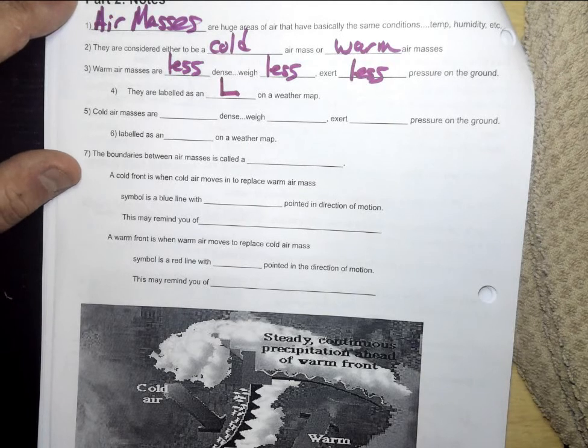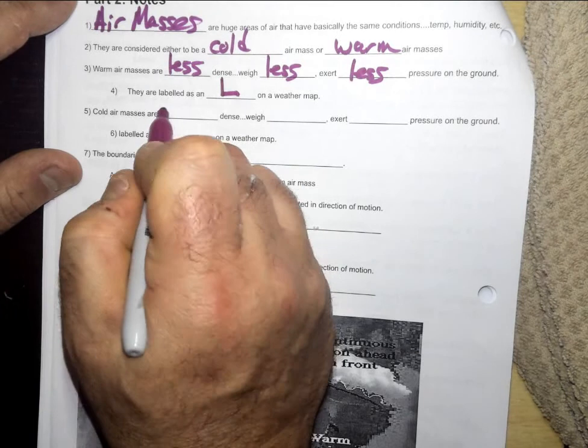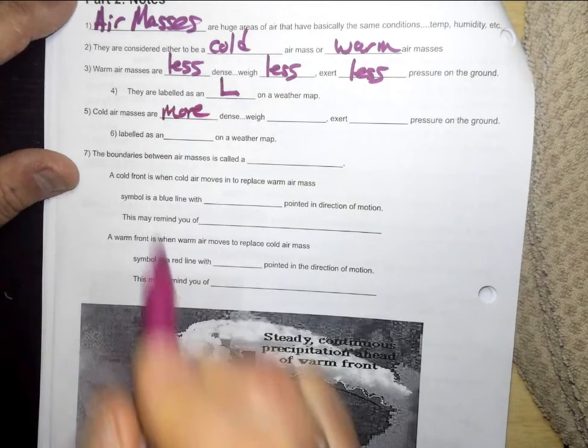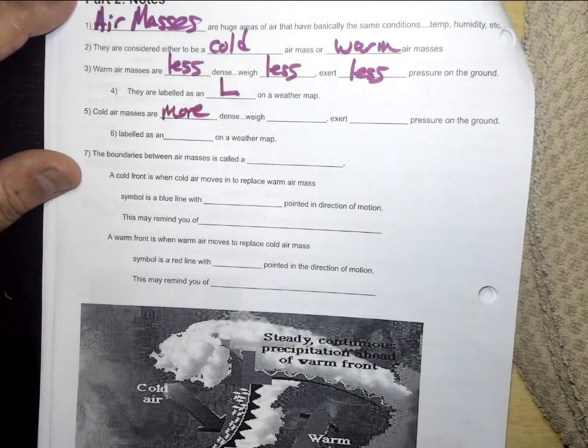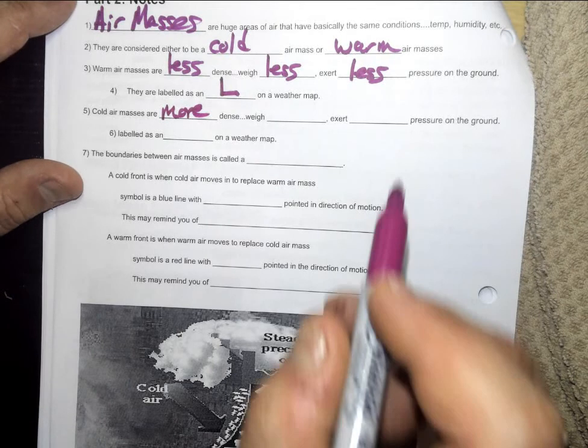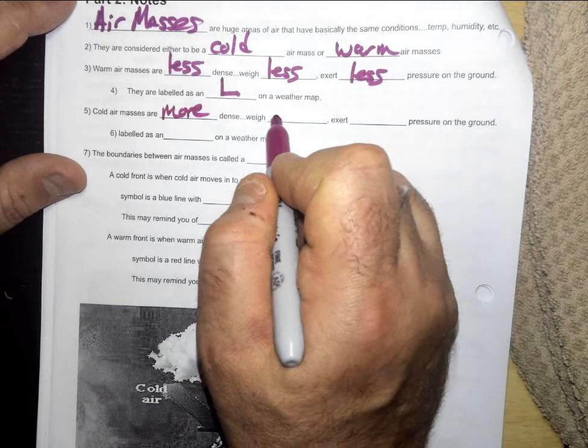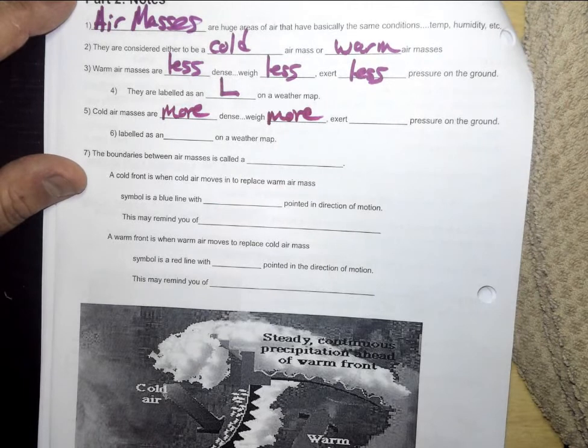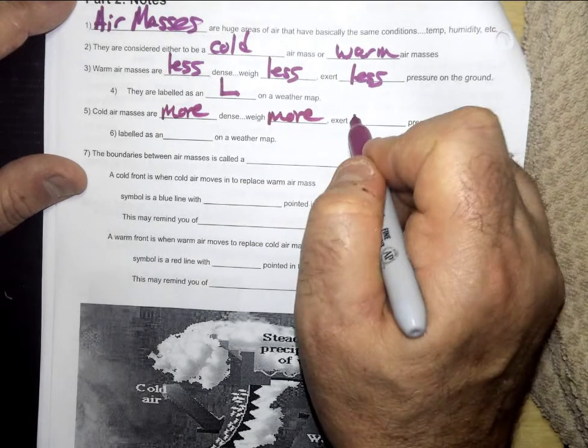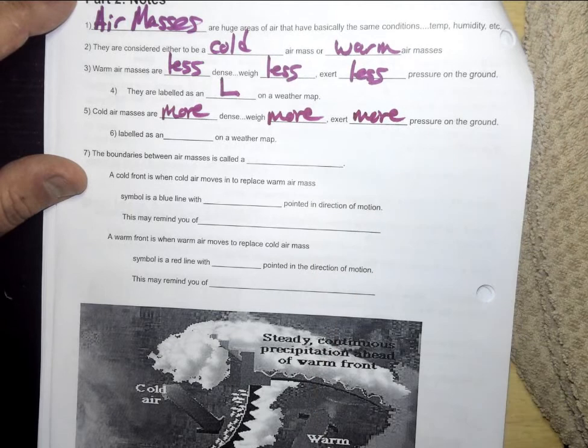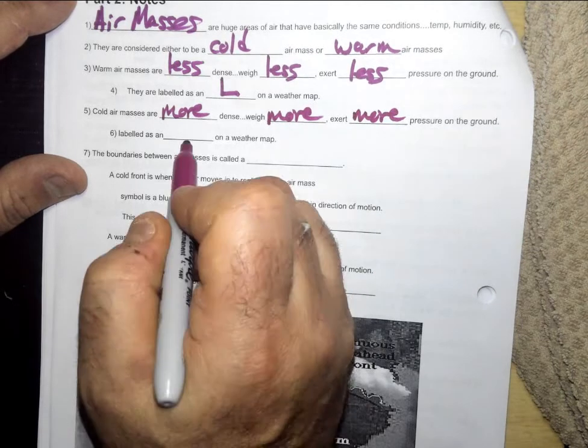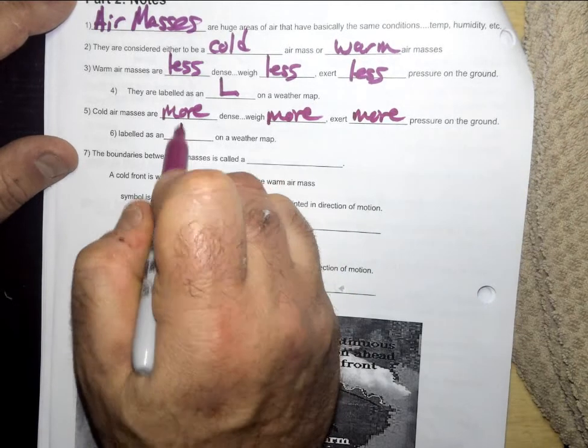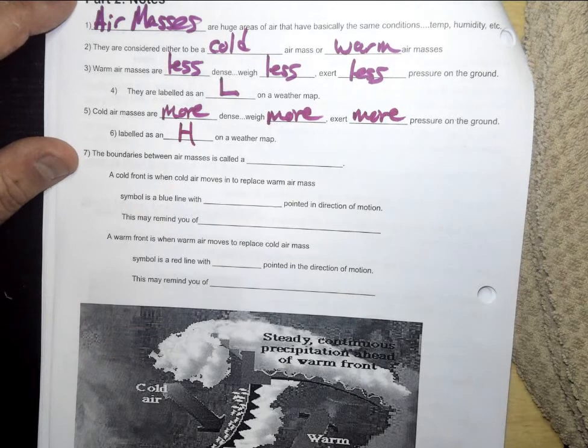Cold air masses, they are more dense because as they get colder, they contract less space between the molecules. So every gallon weighs more. Since it weighs more, it exerts more pressure on the ground. So it's more pressure or high pressure, and those are labeled as an H for high pressure.